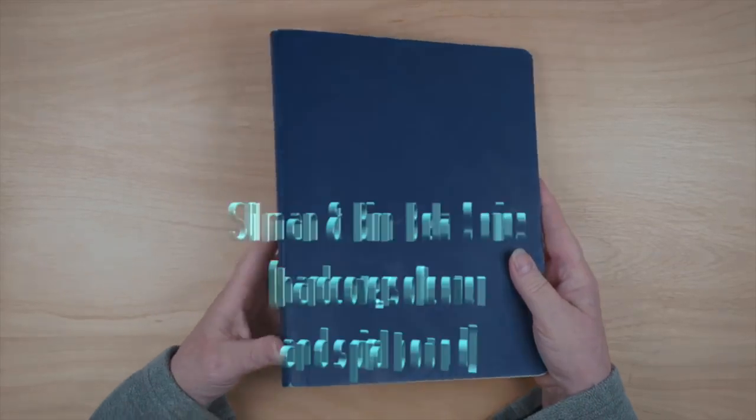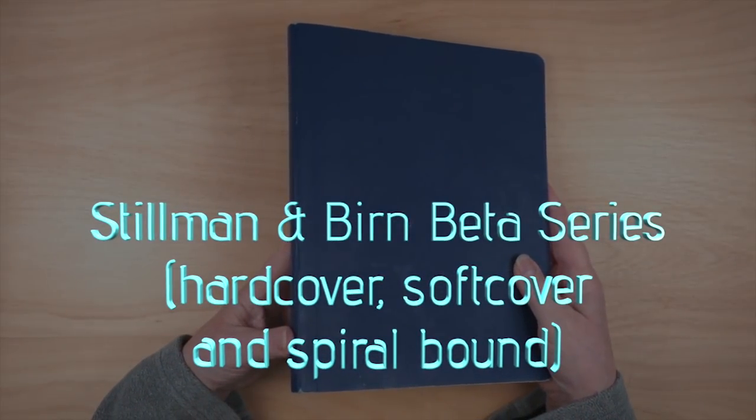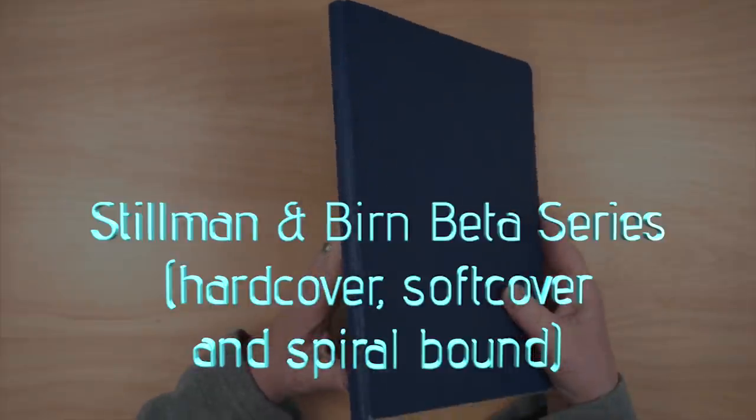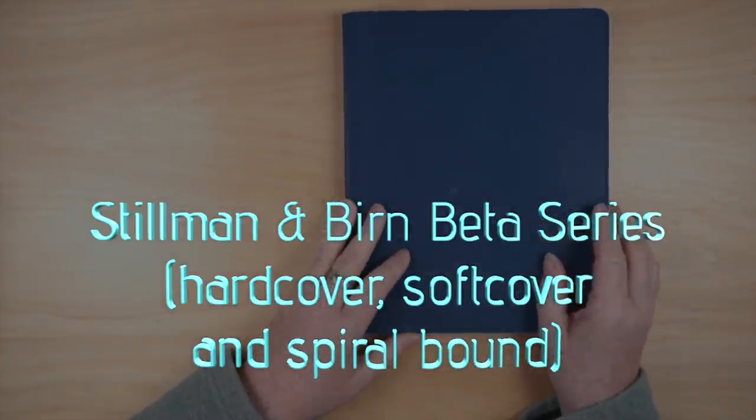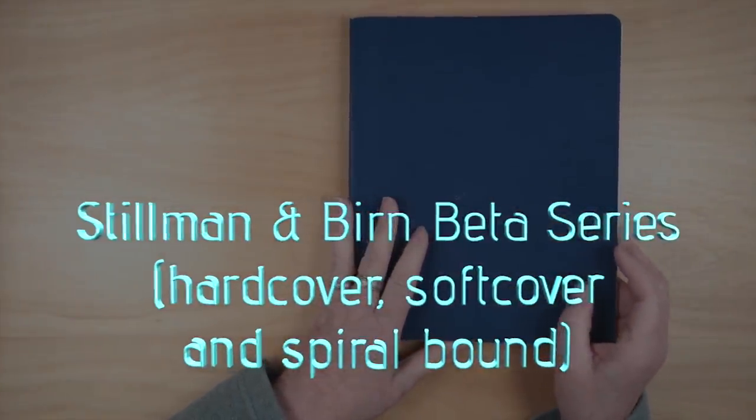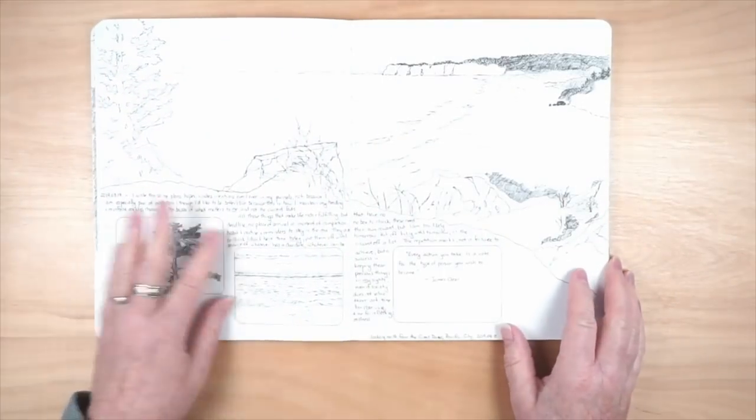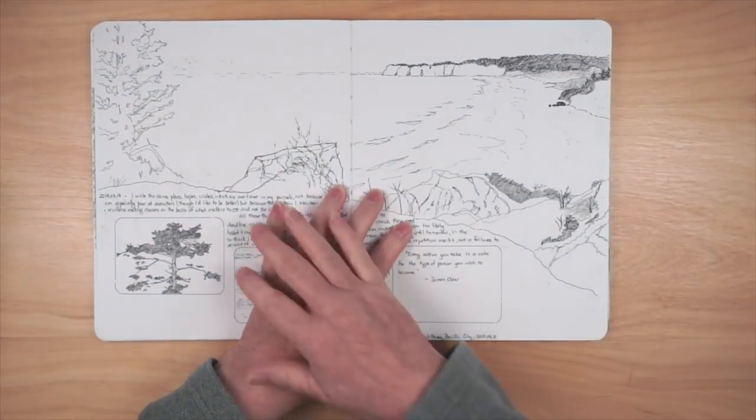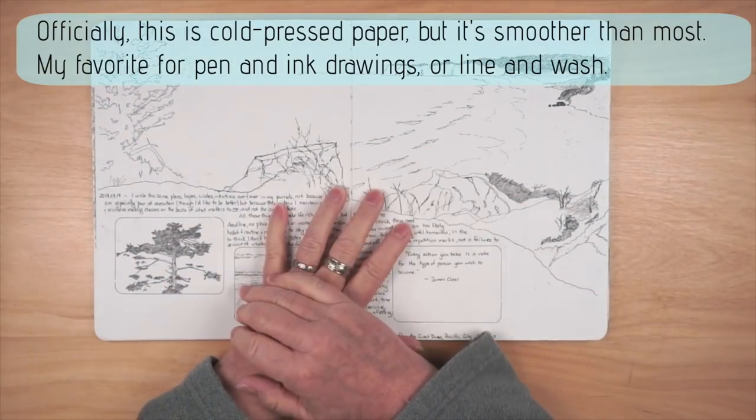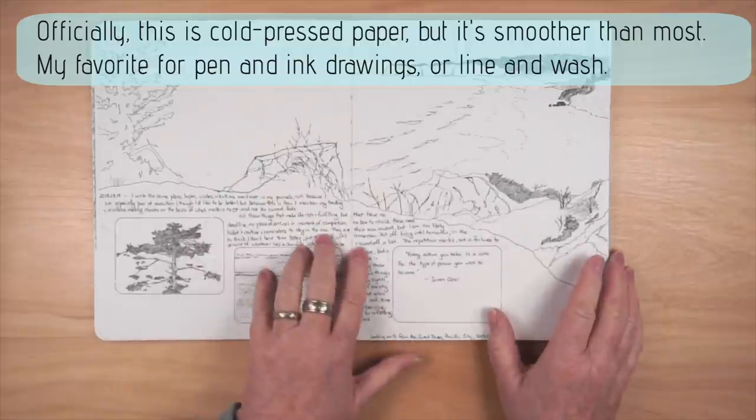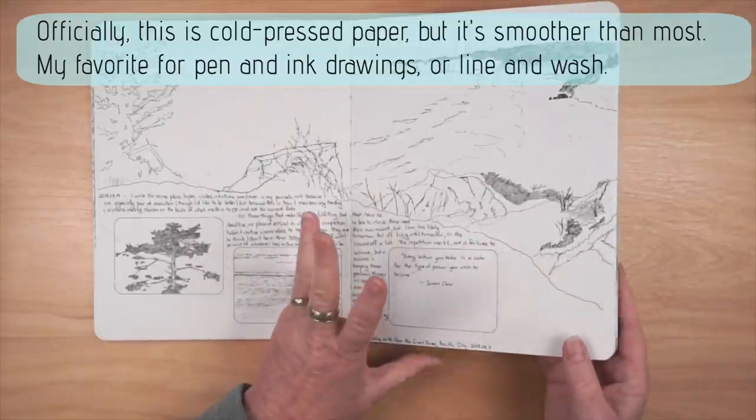Next up is the Stillman & Byrne beta series. This is the softcover version. This also comes in a hardcover and a spiral bound version. And this one is one that I like a lot because it takes an ink line really well. All of them are fine for writing in with a pen, but I like this one for drawing.